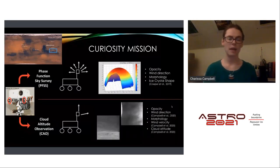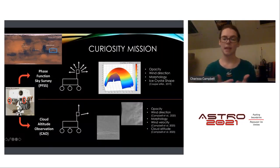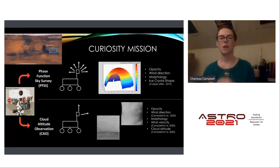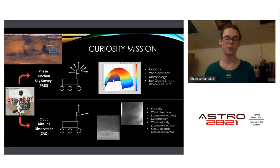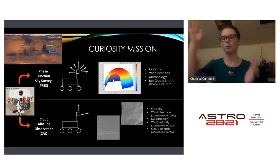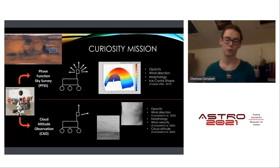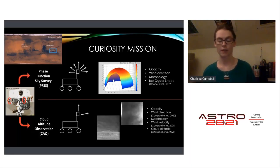Two other observations taken during the aphelion cloud belt season are the phase function sky survey and the cloud altitude observation. The phase function sky survey creates a dome of nine different pointings with three images each, enabling classification of ice crystal shape and phase function based on how sunlight passes through at different angles. The cloud altitude observation uses geological features in Gale Crater — specifically Aeolis Mons or Mount Sharp — along with a zenith movie to calculate cloud altitude by following shadows across the mountain. This is usually impossible without a lidar, which Curiosity doesn't have.